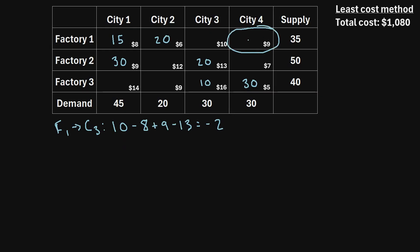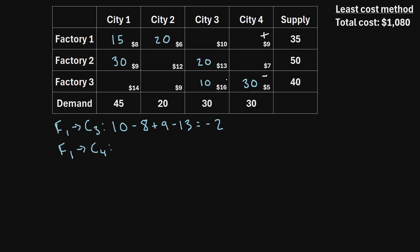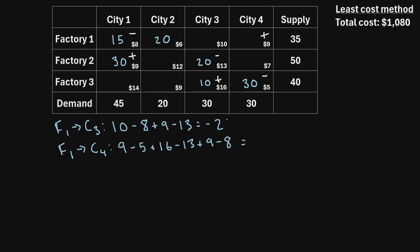For the next unallocated cell, factory one to city four, we draw a closed loop touching only allocated cells. Starting at F1→C4, we move down, then across through several allocated cells, and back to the start. Assigning alternating plus and minus signs, we add the shipping costs: 9 minus 5 plus 16 minus 13 plus 9 minus 8, which turns out to be positive 8. We repeat this process for all remaining unallocated cells.